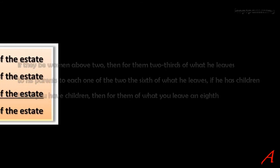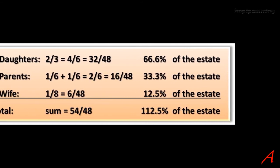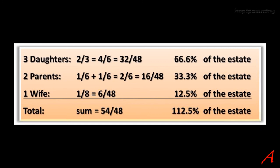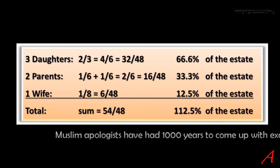So let's do the maths. Let's do the fractions. The daughters get two-thirds, the parents one-sixth, and the wife one-eighth. Converting to forty-eighths so we can add them: that's 32 forty-eighths, plus 16 forty-eighths, plus 4 forty-eighths — or 66.666% of the estate, plus 33.333% of the estate, plus 12.5% of the estate. Adding that up gives 52 forty-eighths, or 112.5% of 100% of the estate.